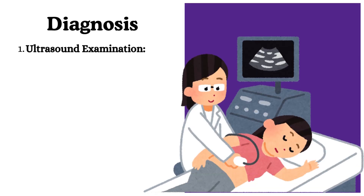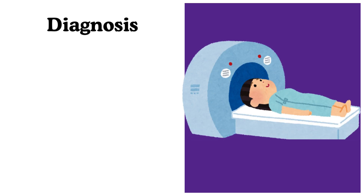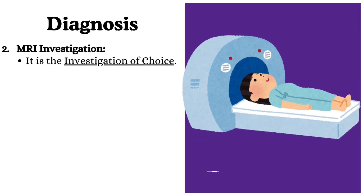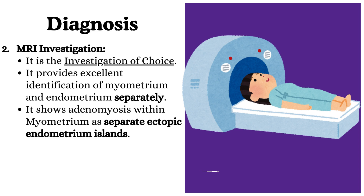Number 1, ultrasound examination: it can show adenomyosis if it is localized. It can show blood-filled, hemorrhagic, distended endometrial glands in the myometrium, and irregular and nodular appearance of the uterus. Number 2, MRI investigation: it is the investigation of choice. It provides excellent identification of the myometrium and endometrium separately, showing adenomyosis within the myometrium as separate ectopic endometrium islands.